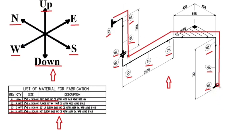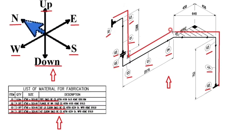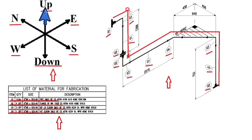Let's do a quick double check. The pipeline started to travel to the up. Then the pipeline turns to the north-west. Then the pipe continues to the north direction. Then the pipeline travels to the up. Then the pipeline turns to the west direction.